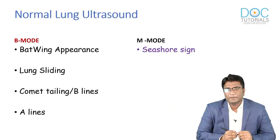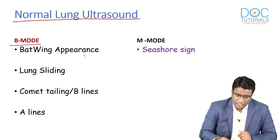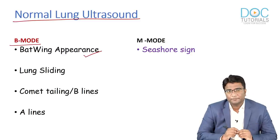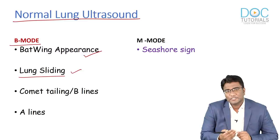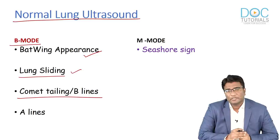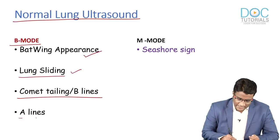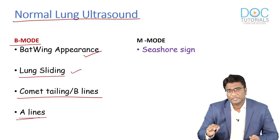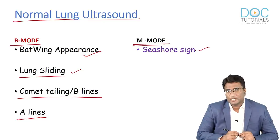To summarize normal lung ultrasound findings: on B-mode, we see the batwing appearance of ribs and pleura, lung sliding (constant movement of visceral against parietal pleura), B-lines (vertical hyperechoic comet-tail lines extending from the pleural line), and A-lines (horizontal reverberation artifacts). On M-mode, the important normal sign is the seashore sign.